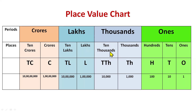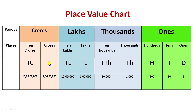We have shortcuts for all the places. For ones: O, for tens: T, for hundreds: H, for thousands: TH, for ten thousands: TTH, for lakhs: L, for ten lakhs: TL, for crores: C, for ten crores: TC. All these places can also be written in numeral form.